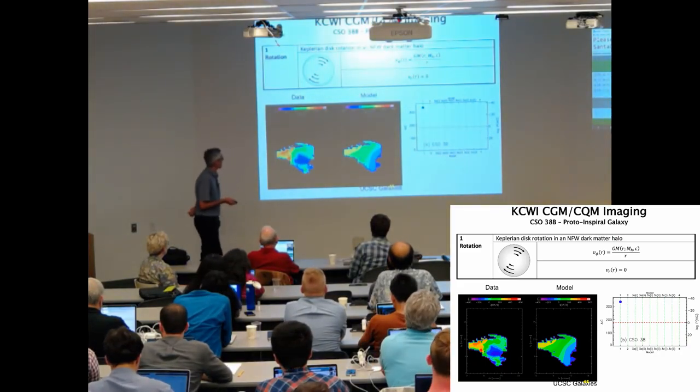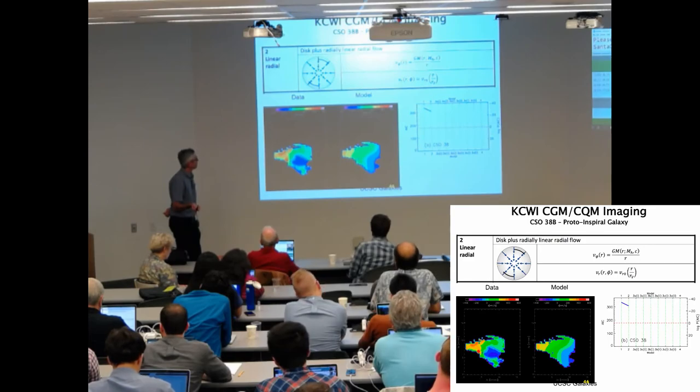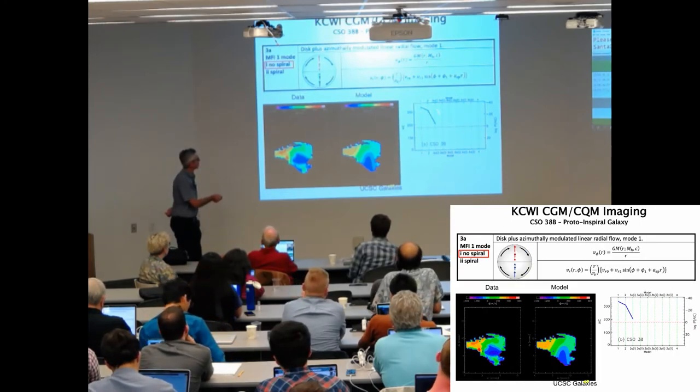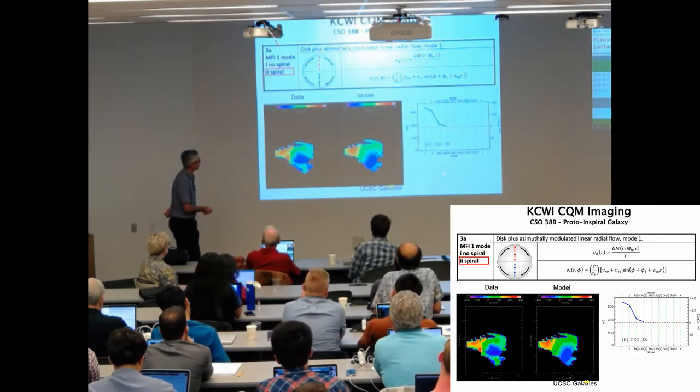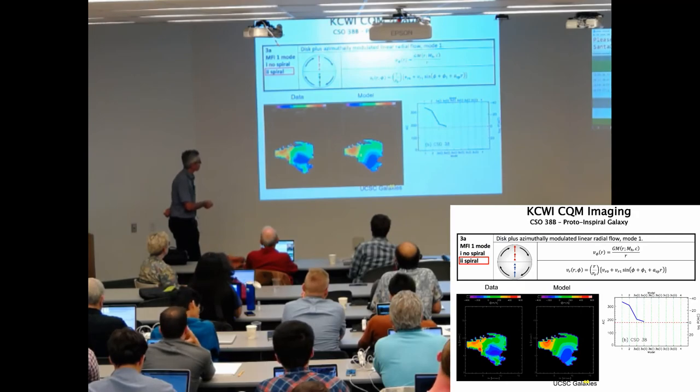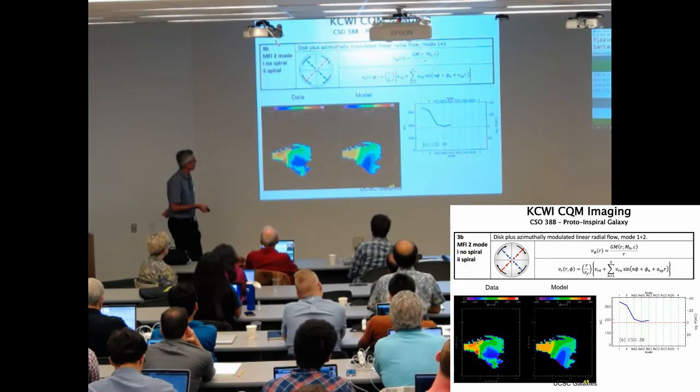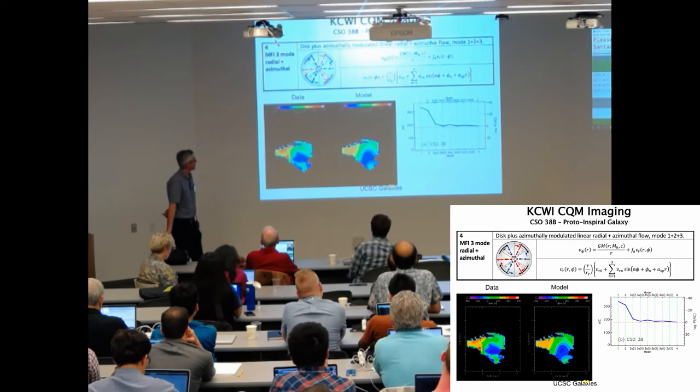Start with simple rotation. That's the data. That's the model. AIC. So add radial variation, no azimuthal variation. Now one mode. Look at that. It goes down from 340 almost to 200. And what you see is, instead of having a simple gradient in the velocity, the spider diagram, you have gradient going in an orthogonal direction. That's an indicator of this radial component. And then we can add more modes. It gets maybe slightly better. But one mode does a pretty good job.